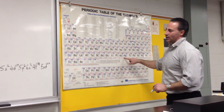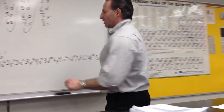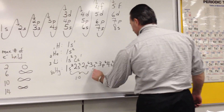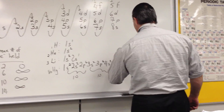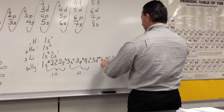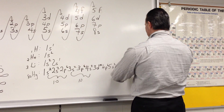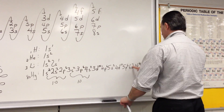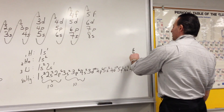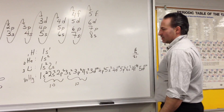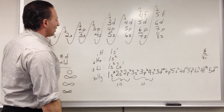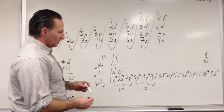Now if you want to make extra sure, you can see that there are 10 electrons here, 10 electrons there, another 10 here. So 10, 20, 30, 40, plus 8 is 48, plus 8 is 56, plus 10 is 66, plus 14 gives a total of 80 electrons — which is what the configuration of mercury is. So this is the electron configuration of mercury, and it follows the pattern as predicted.